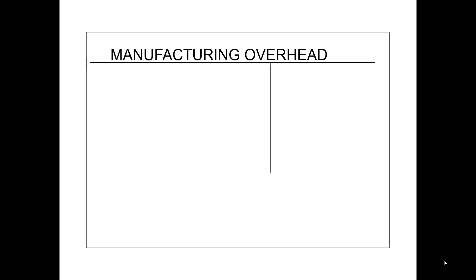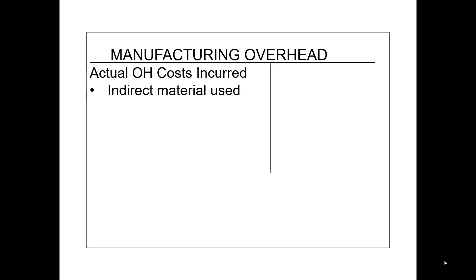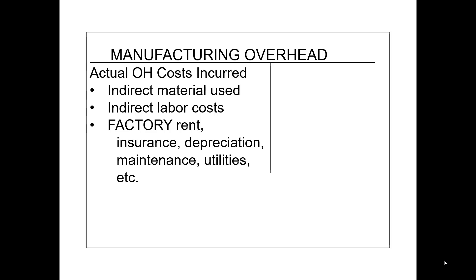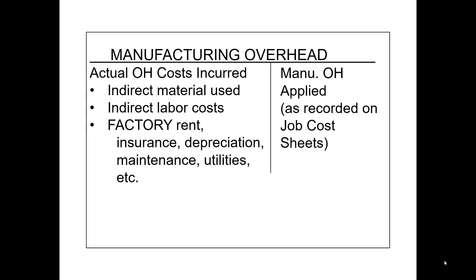Your T-account will initially look something like this. On the debit side, when you incur overhead costs such as indirect material use, indirect labor cost, or factory rent, insurance, depreciation, maintenance, utilities — any of those facilities-type costs — if it's for the factory, it will be recorded as a debit to manufacturing overhead. Then you will put your manufacturing overhead applied costs on the credit side of this account. So it is used to keep track of two different things, which is very different from your other accounts.